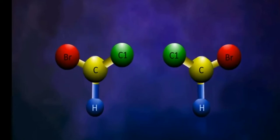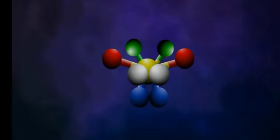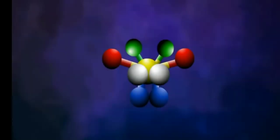be superimposed on their mirror images. The molecules which are not superimposable on their mirror images are called chiral molecules. The property of non-superimposability of a structure on its mirror image is called chirality.